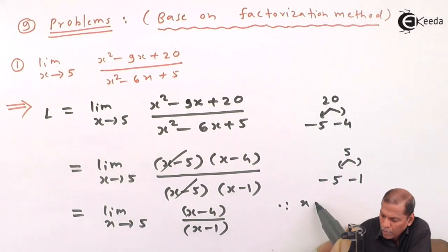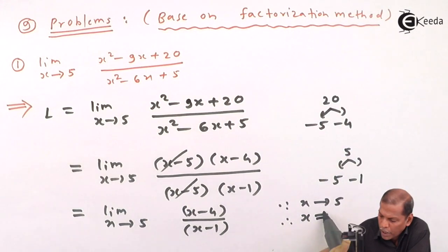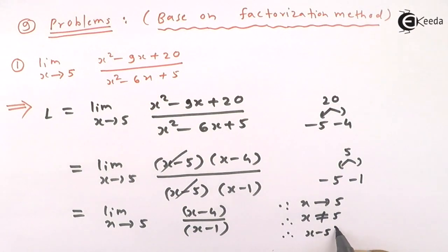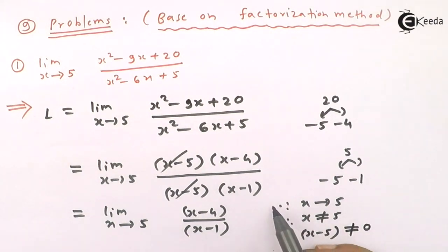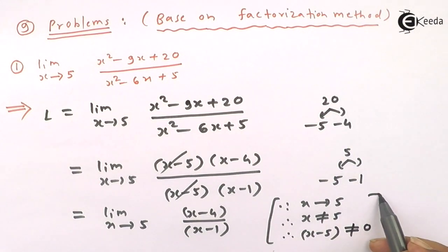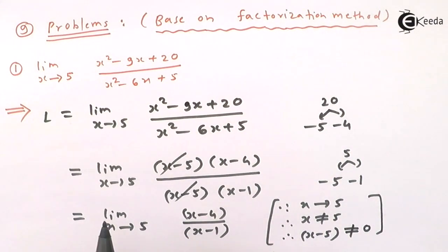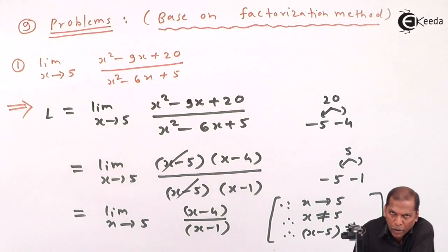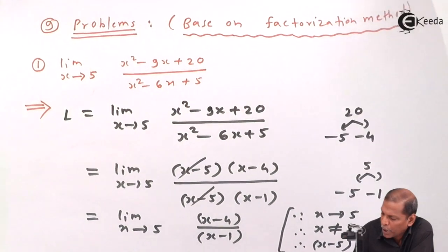Since x tends to 5 means x is not equal to 5, which means x - 5 is not equal to 0. It means here we can cancel x - 5 from numerator and denominator. So the remaining terms are limit as x approaches 5 of (x - 4)/(x - 1).